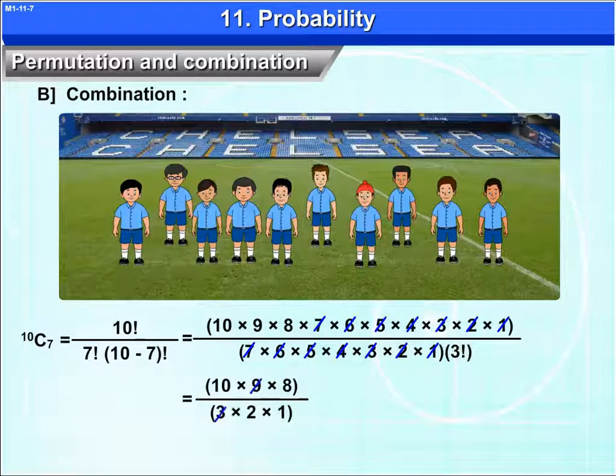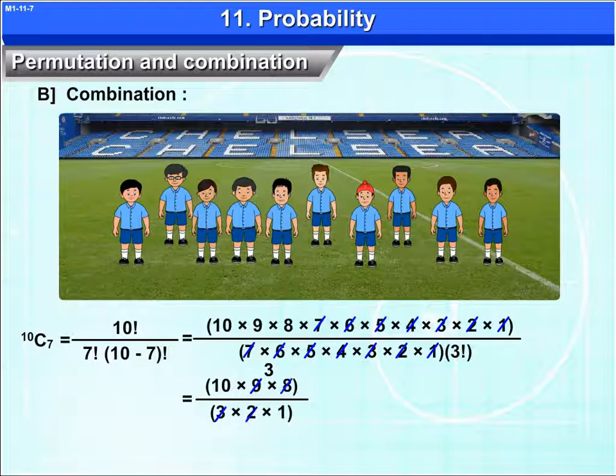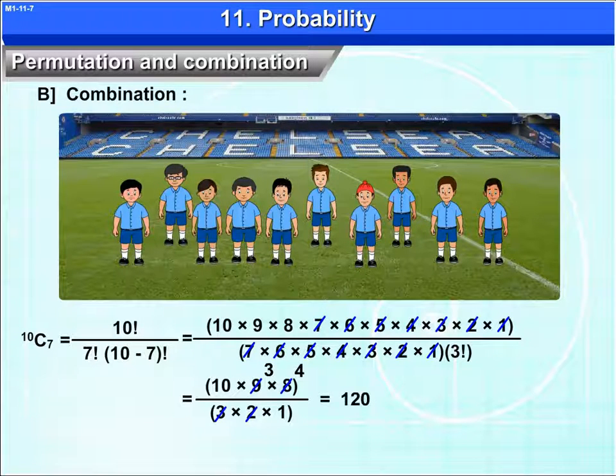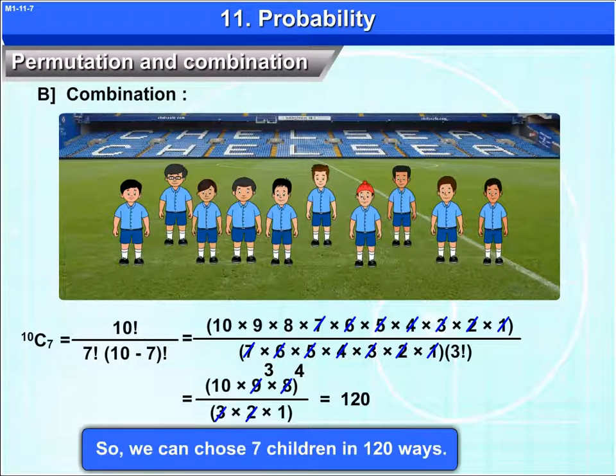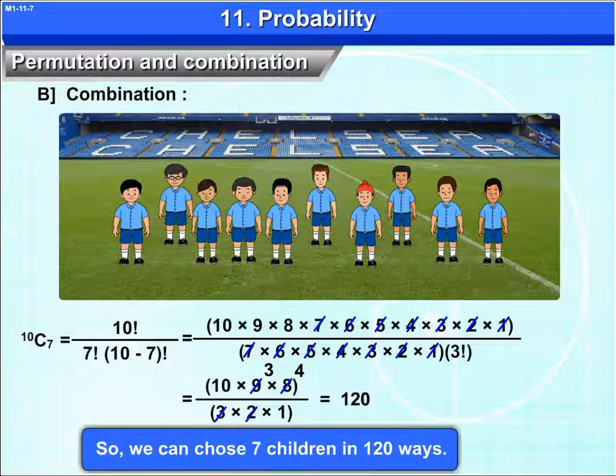3 ones are 3, 3 threes are 9. 2 ones are 2, 2 fours are 8. That equals to 120. So we can choose 7 children in 120 ways.